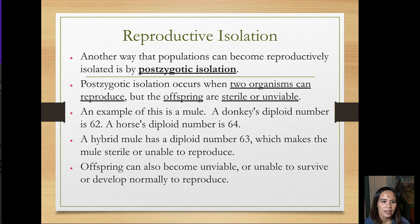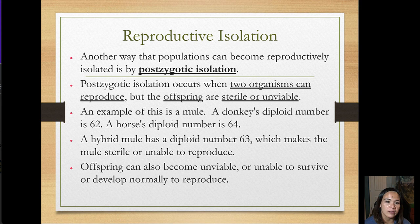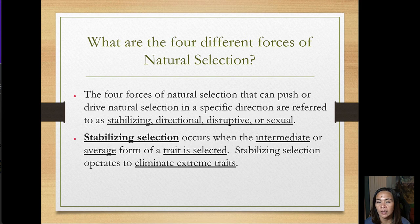Post-zygotic isolation occurs when two organisms can reproduce but the offspring are sterile or unviable. For example, a horse has a diploid number of 64, and a donkey has a different number; their hybrid mule has a diploid number of 63, making the mule sterile and unable to reproduce. Offspring can also be unviable or unable to develop normally — this is called post-zygotic isolation.